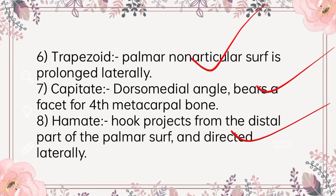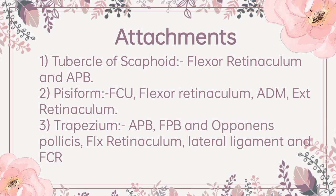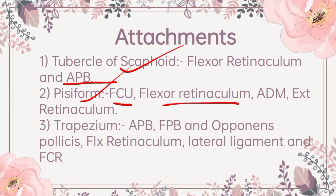Moving further now to the attachments. There are four bony pillars at the four corners of the carpus, and all attachments are to those four pillars. The tubercle of the scaphoid gives attachment to the flexor retinaculum and a few fibers of abductor pollicis brevis. Moving further to pisiform: it attaches flexor carpi ulnaris, flexor retinaculum, abductor digiti minimi and extensor retinaculum.